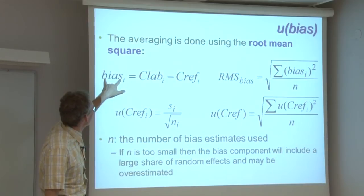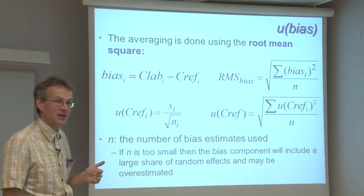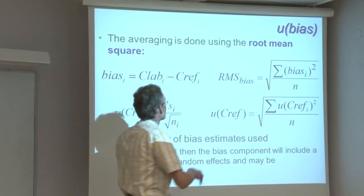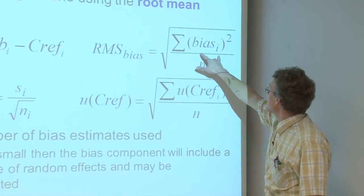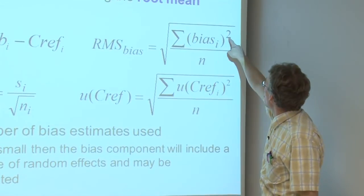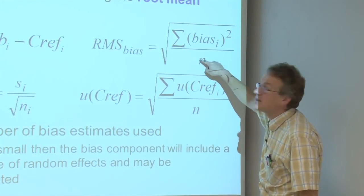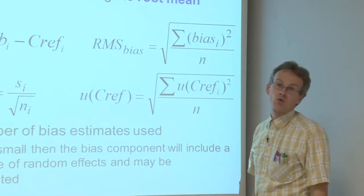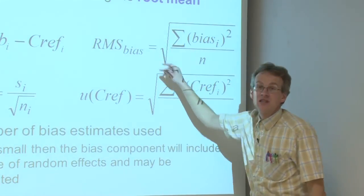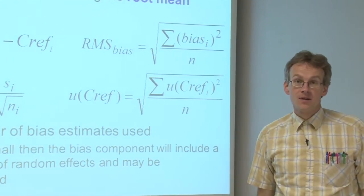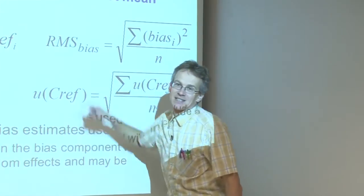You should obtain several bias values, preferably from several different reference materials or interlaboratory comparisons. The RMS_bias is then found as follows: you take all your bias estimates, square each of them, sum all the squares, divide by the number of bias estimates, and finally take the square root. This averaging procedure is called the root mean square approach, which is where the RMS comes from.